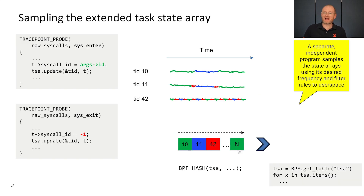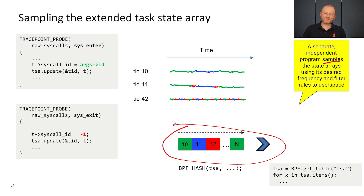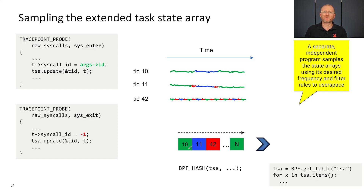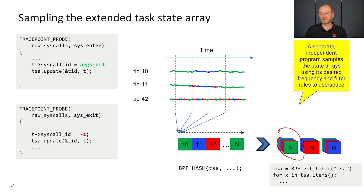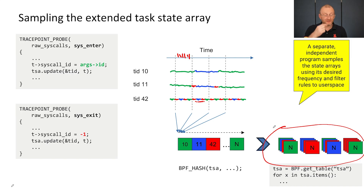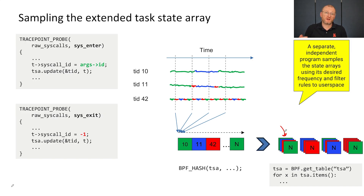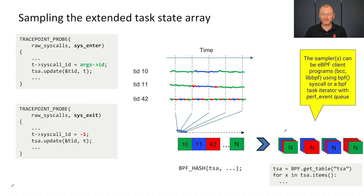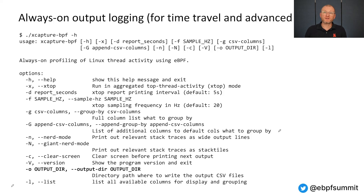That's where the second half comes into play — you can choose to sample this. The state is always up to date with all the extra context you want. By default I sample once per second: first second you get this output, next second you get this. You may have 50,000 threads in your system, but you don't have to emit information for all 50,000 every time, because you can define that the only interesting threads are the ones that are on CPU, trying to be on CPU, or sleeping in the D state. You can define whatever rules you want. That's what tracking means, not tracing.